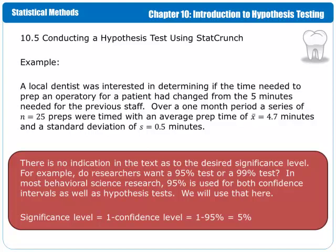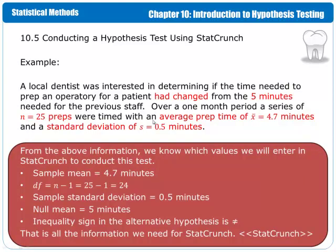The values that we will need to know for StatCrunch are the sample mean, the degrees of freedom, the sample standard deviation, the null mean, and which inequality sign we're going to use for the alternative hypothesis. The sample mean is 4.7 minutes. The degrees of freedom are equal to the sample size minus 1. In this case, the sample size is 25, so the degrees of freedom are 24. The sample standard deviation is also given to us as 0.5 minutes.